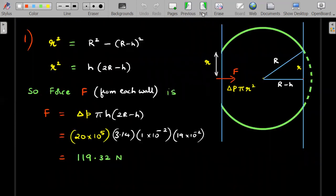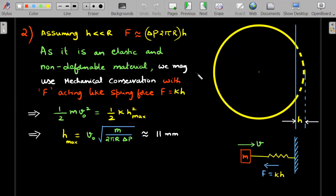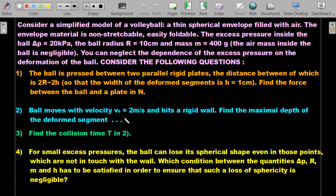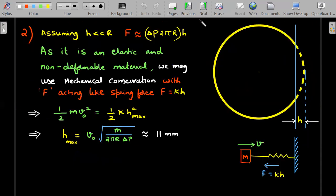In the second question, the ball is moving and hits a rigid wall. Assume the ball has got compressed by a distance h as shown. The h was 1 cm in the first question but should not be taken here because the velocity of the ball is very small—only 2 m/s. I'll assume the value of h that gets deformed is very small. If it isn't, I'll come back and solve the problem.